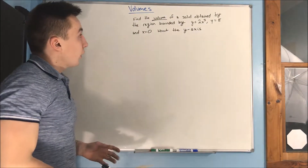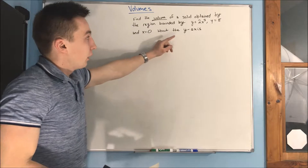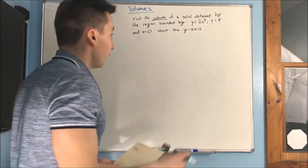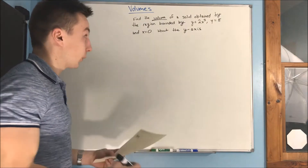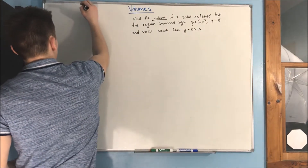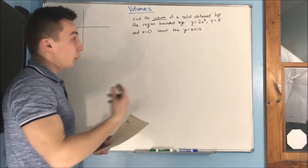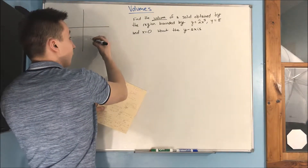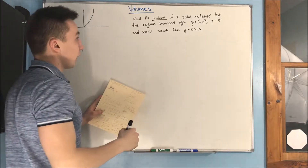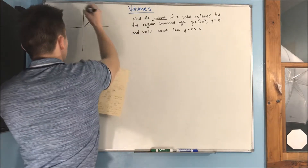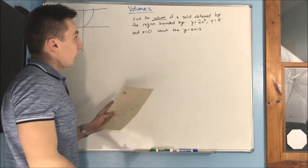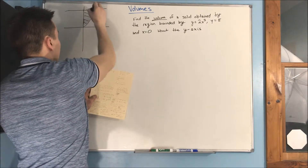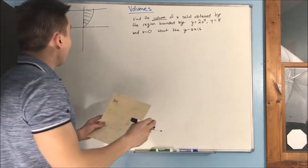Here's another example: find the volume of a solid obtained by the region bounded by y equals 2x cubed, y equals 8, and x equals 0 about the y-axis. First we need to figure out what this picture looks like. We have the graph of x cubed with a 2 in front, which amplifies the graph. It's bounded by y equals 8 on top and x equals 0. We're finding that area and rotating it about the y-axis, giving us another parabolic cone.